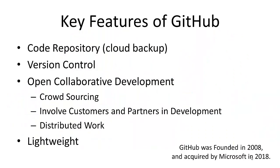Some key features of GitHub: GitHub is a code repository, so it's basically a cloud backup for all of your code. You can upload code anytime you want up to the cloud, and it will save a backup of your code. It also has version control, so as you make edits to the code, you can merge those edits into your original code, and you can always revert back to any previous version you want anytime.